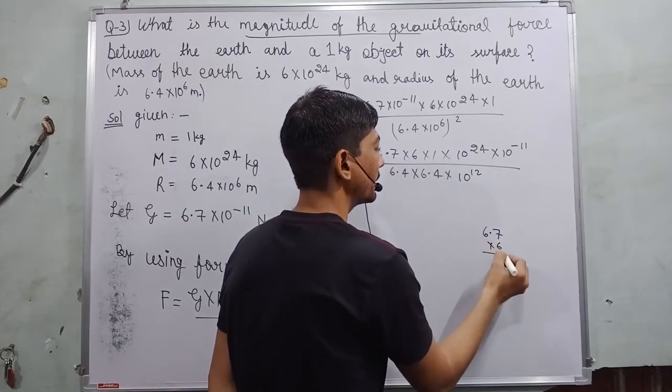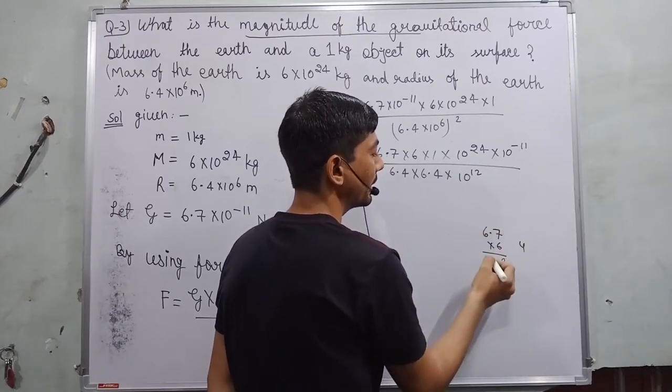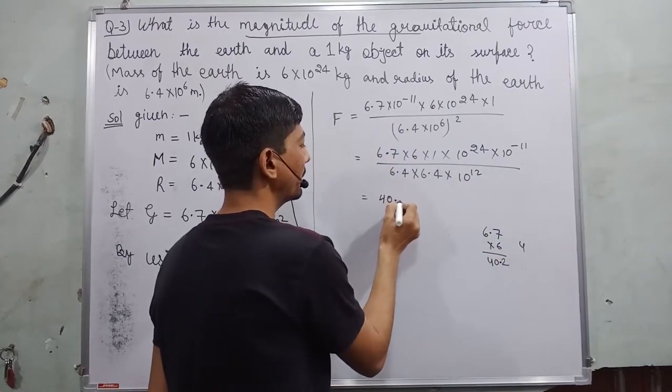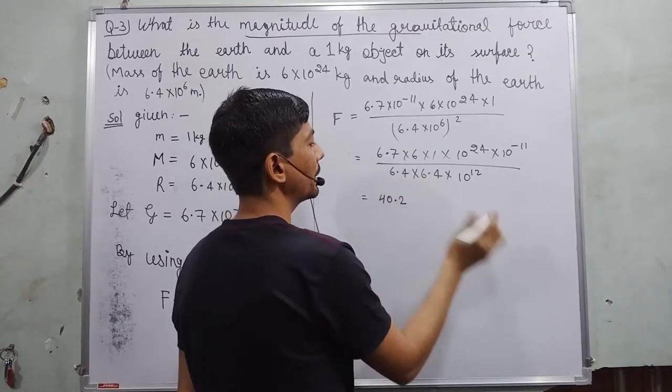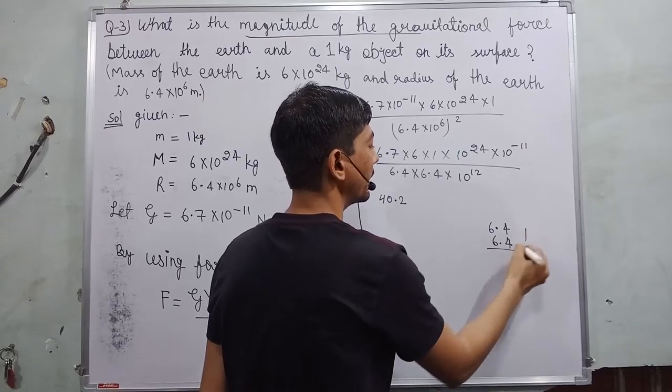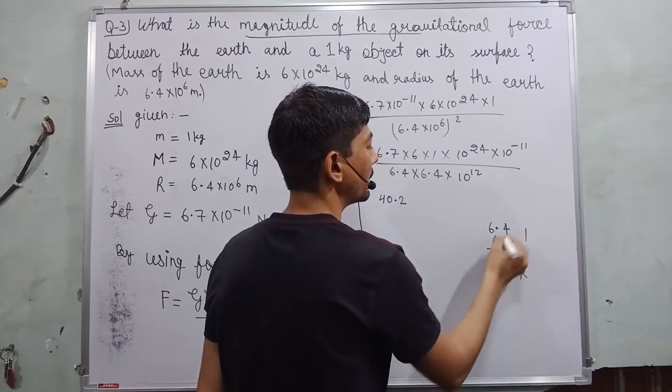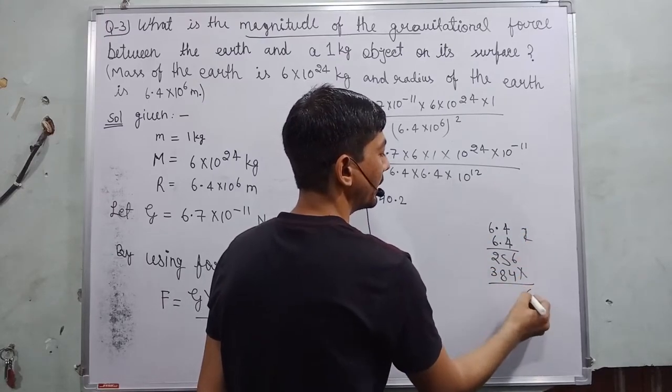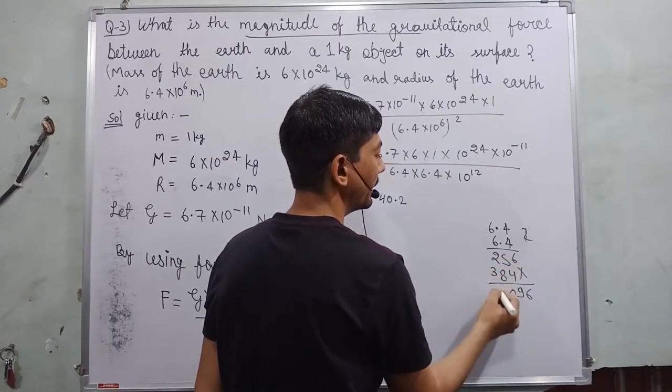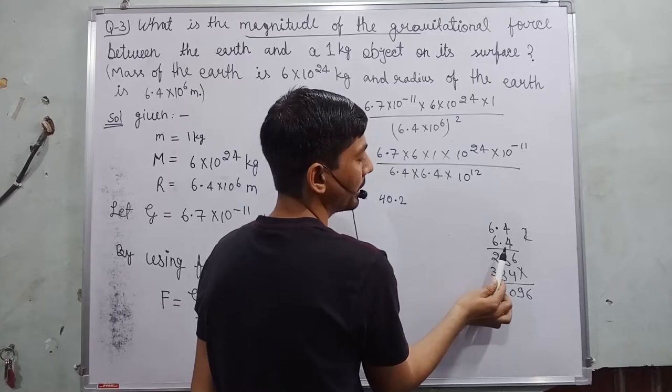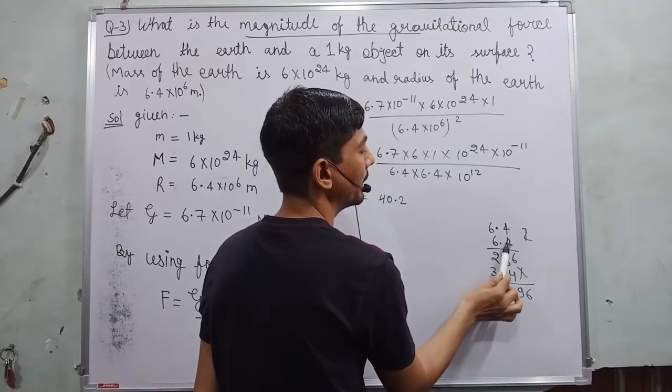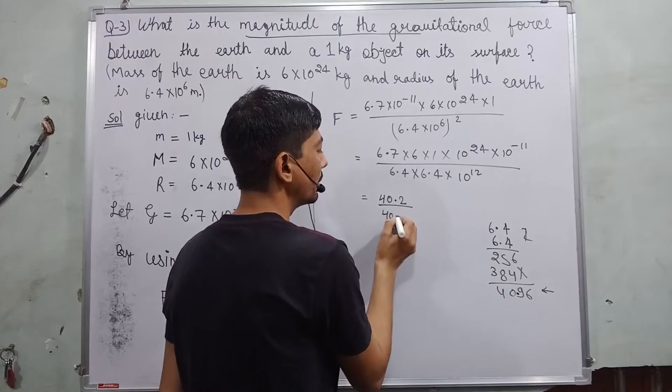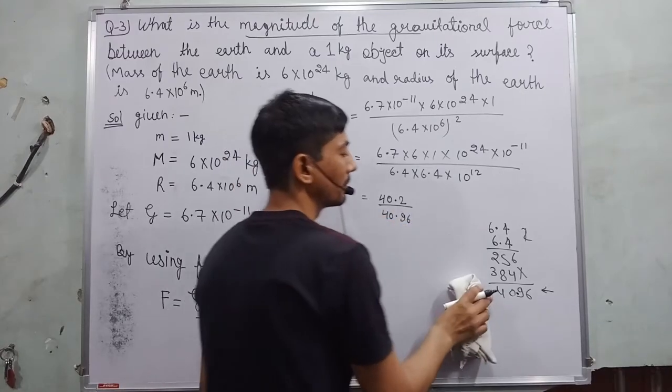6.7 multiply by 6. 6 × 7 = 42, 4 carry. 6 × 6 = 36 plus 4, 40. And after one digit I apply decimal, so here 40.2. Now I multiply 6.4 into 6.4 like this. 4 × 4 = 16, 1 carry. 4 × 6 = 24, 25. 6 × 4 = 24, 2 carry. 6 × 6 = 36 plus 2, 38. So here I write 6, 5, 4, 9, 8, 2, 10, 1 carry, 3, 1, 4. We observe here there are 2 digits after decimal, 1, 2. So from this side 1, 2, I apply here decimal. So our multiplication will be 40.96.